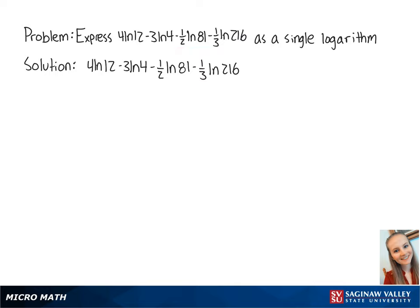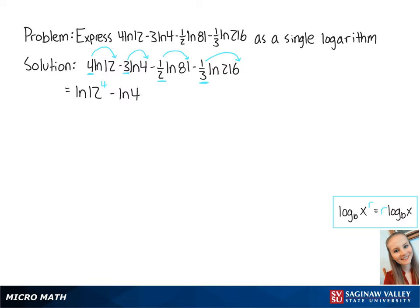First, we're going to use the power property to rewrite these numbers as exponents. So this becomes the ln of 12 to the 4th power minus the ln of 4 cubed minus the ln of 81 to the 1 half power.